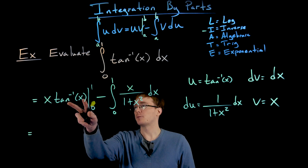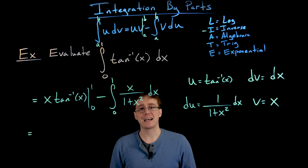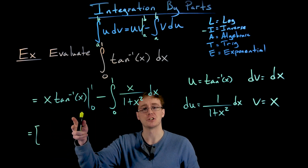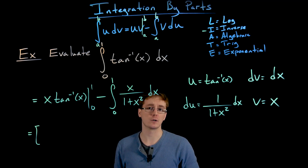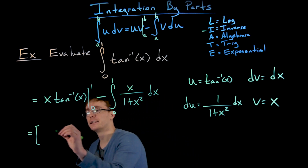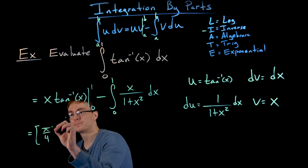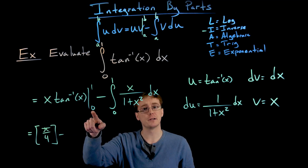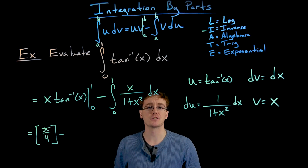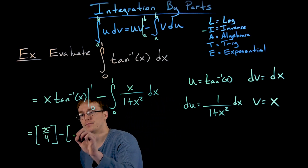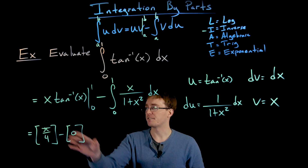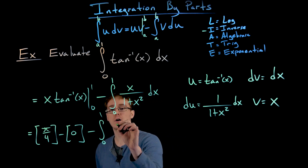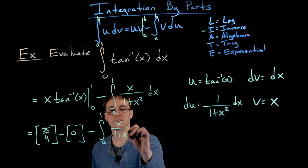For the first piece, we evaluate x times tangent inverse of x at the upper limit of 1. That gives us 1 times tangent inverse of 1, which equals pi over 4. At the lower limit, we get 0 times tangent inverse of 0, which is 0. So the first piece simplifies to pi over 4, and we still need to subtract the definite integral from 0 to 1 of x over 1 plus x squared.